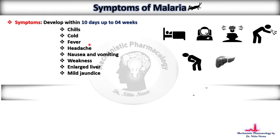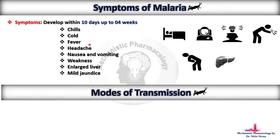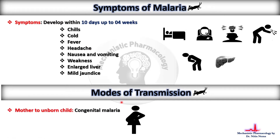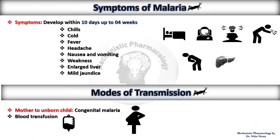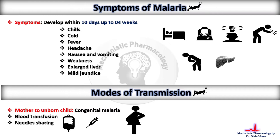Coming towards its modes of transmission, malaria is transmitted from mother towards its unborn child — this type is called congenital malaria. Malaria is also transmitted through blood transfusion as well as needle sharing.